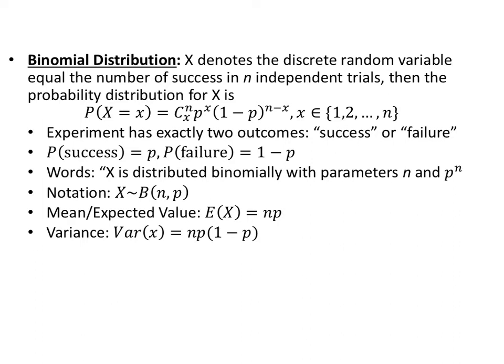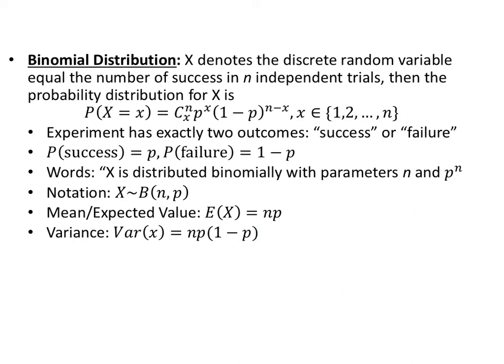We say this verbally as: X is distributed binomial with parameters N — how many trials you have — and P, the probability of success. The notation is X tilde B(N, P). The mean, or expected value, is E(X) = N times P. The variance is N times P times (1 minus P), which is your expected value times the probability that the event doesn't happen.